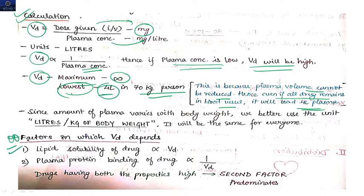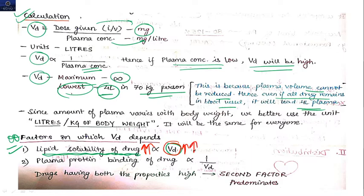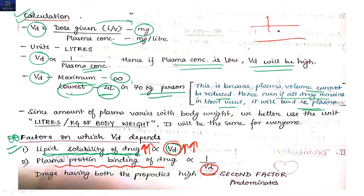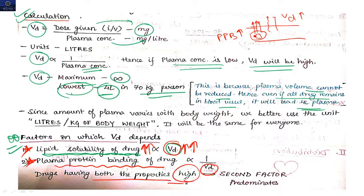Now the factors on which volume of distribution depends — very important. First: lipid solubility of the drug is directly proportional to VD. More lipid solubility means the drug more easily crosses membranes, so VD is higher. Second: plasma protein binding of a drug is inversely proportional to VD. If the drug binds to plasma protein, the size of the drug increases and it cannot easily cross membrane barriers, so more plasma protein binding means less VD. Drugs with high lipid solubility and low plasma protein binding both favor crossing the membrane barrier and increasing VD.